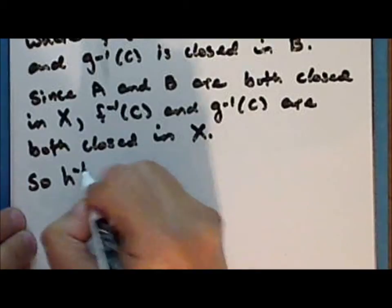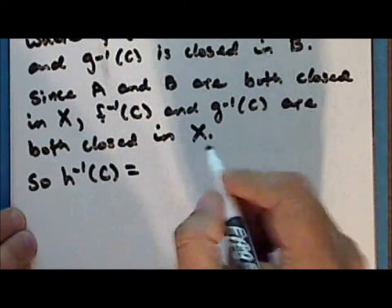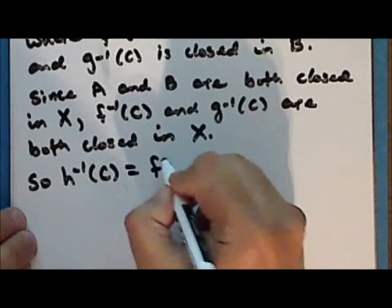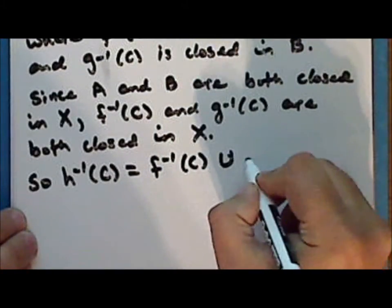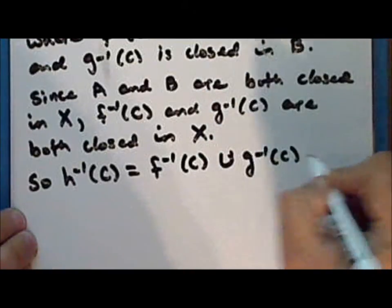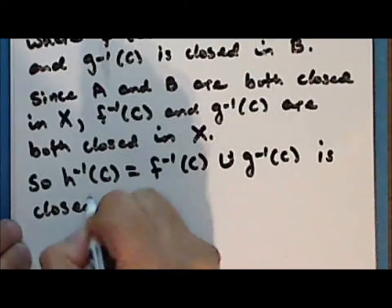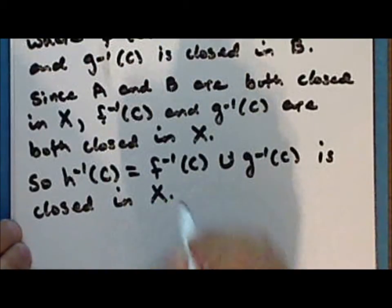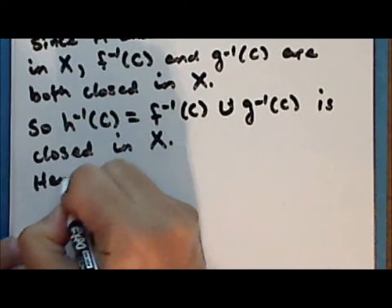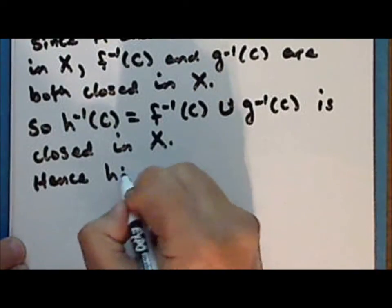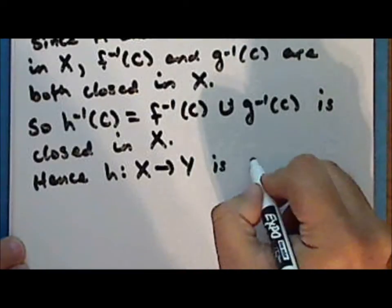And so the inverse image of c under the map h is a finite union of closed sets and is therefore closed in the space x. And hence the function h mapping the space x to the space y is continuous.